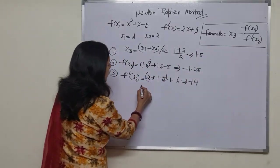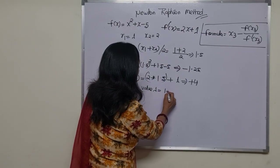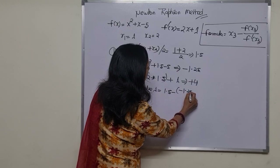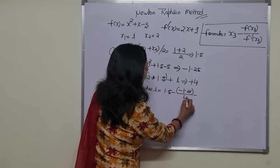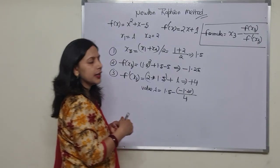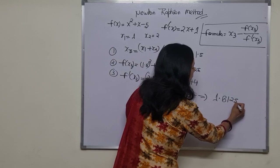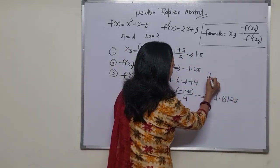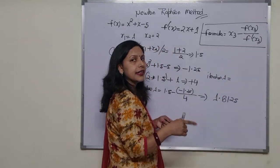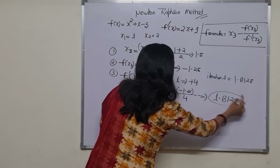Now we have all the values to put into the formula. The value is: 1.5 minus f(x3) which is minus 1.25, divided by 4. Solving this out, we get 1.8125. So in iteration number 1, we are getting the value 1.8125.